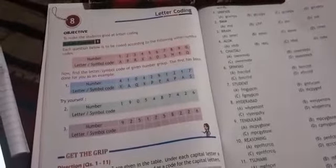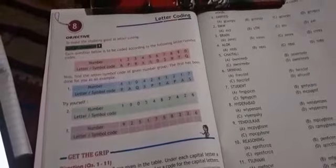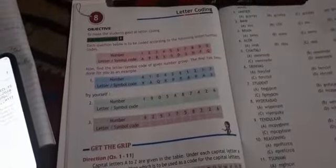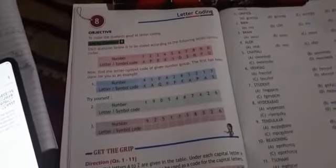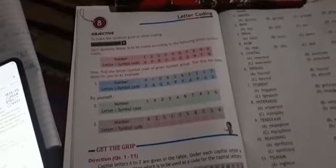Letter coding involves A, B, C, 1, 2, 3 - alphabets and numbers. Coding means what? Coding is a method of transmitting a message between the sender and the receiver without a third person understanding it.